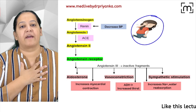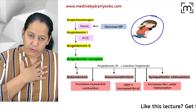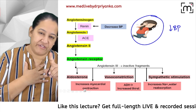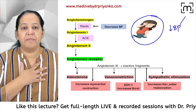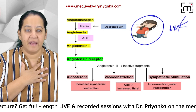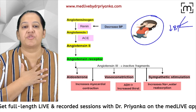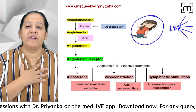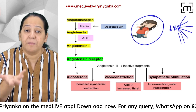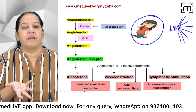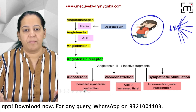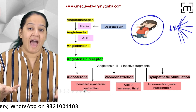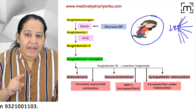Suppose this is my diagram. Due to any reason, my blood pressure falls — maybe I'm having diarrhea, vomiting, postural hypotension, less fluid intake, less feeding, or some disease causing secondary BP drop. If my BP is falling, it's an emergency.